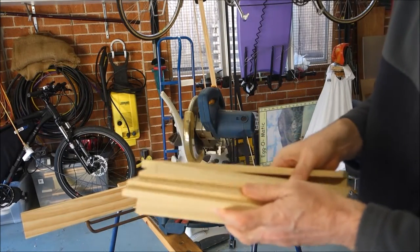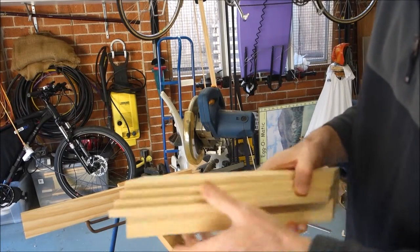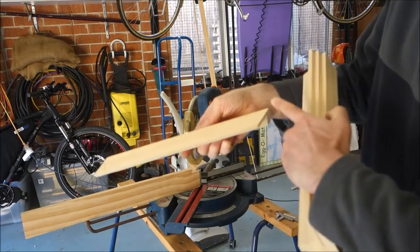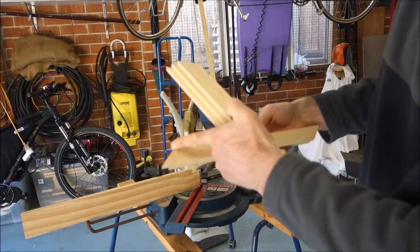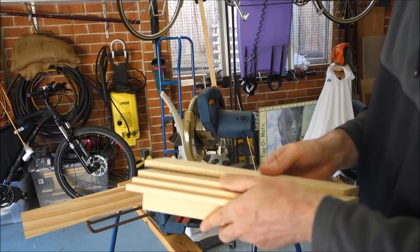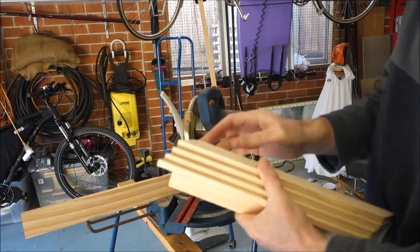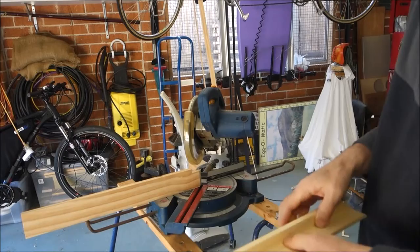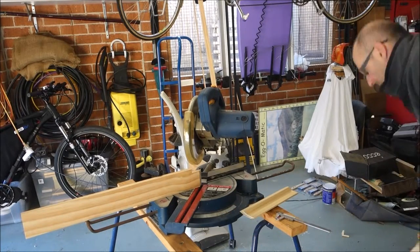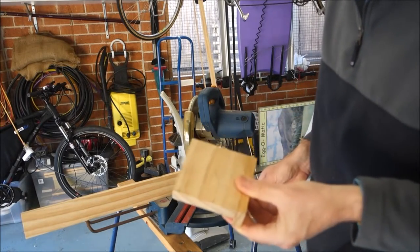So we now have 4 pieces of timber roughly the same length. Now one end is finished so to speak, but as you can see the angles are both the same. So now we need to remove the material in the other direction. And the trick to getting a nice square frame, apart from having a nice 45 degree angle here, is actually to get the length of the timber all the same.